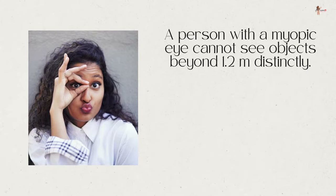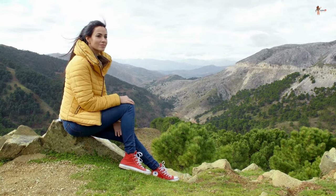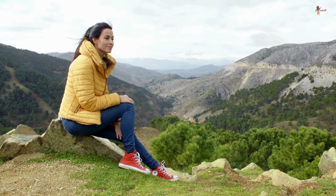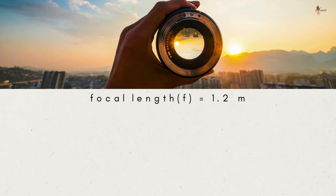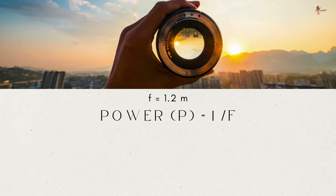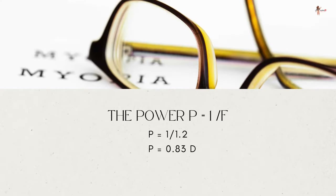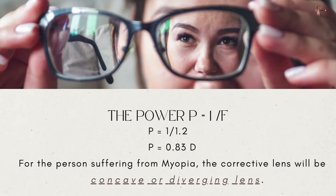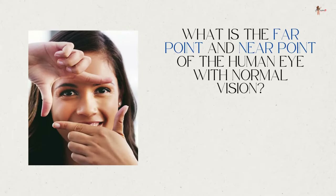Question 2: A person with a myopic eye cannot see objects beyond 1.2 meters distinctly. What should be the type of corrective lens used to restore proper vision? To view distances beyond 1.2 meters, the focal length of the lens should be 1.2 meters. Power = 1/f = 1/1.2 = 0.83 diopters. Therefore, the corrective lens for a myopic person will be a concave or diverging lens with a power of −0.83 diopters.